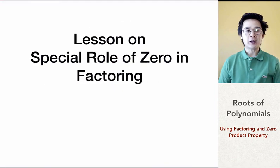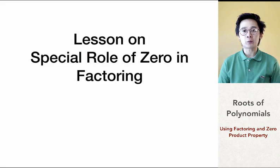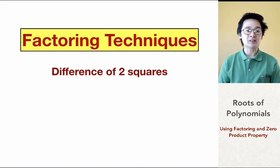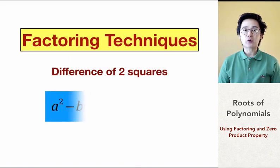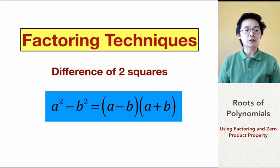We're going to use factoring techniques so we're not limited to just graphs or already-factored polynomials. The first technique is the difference of two squares. For a polynomial of the form a² − b², we can factor it into (a − b)(a + b). If we recognize this pattern, we can easily separate the polynomial into two factors using this formula.